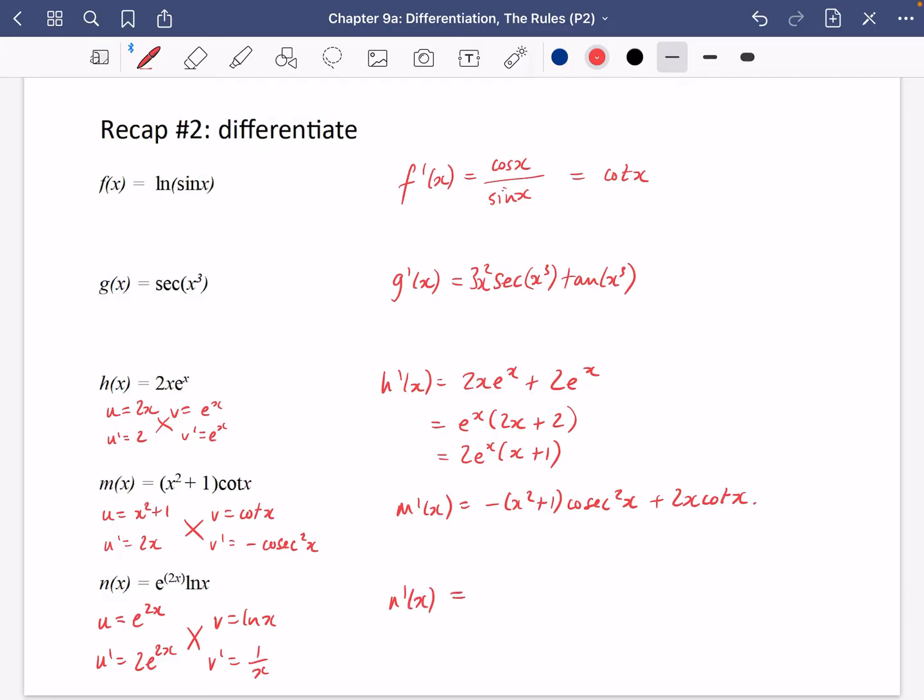So n dash x is going to be 1 over x times e to the 2x which is e to the 2x over x plus 2e to the 2x ln x. And if you wanted to you could factorise out that e to the 2x and you've got 1 over x plus 2 ln x.